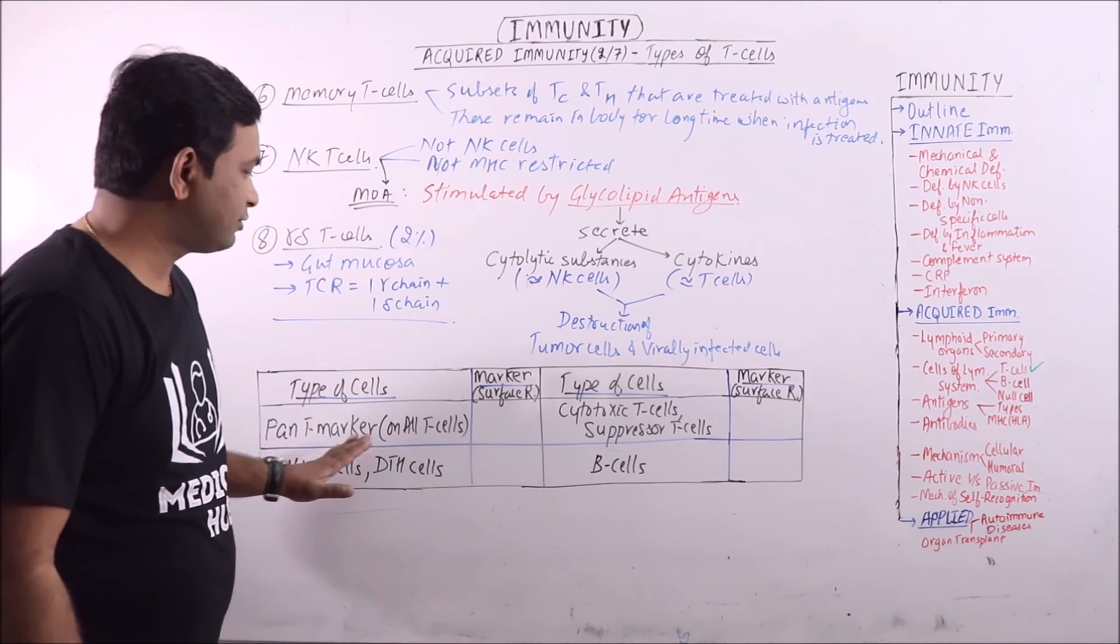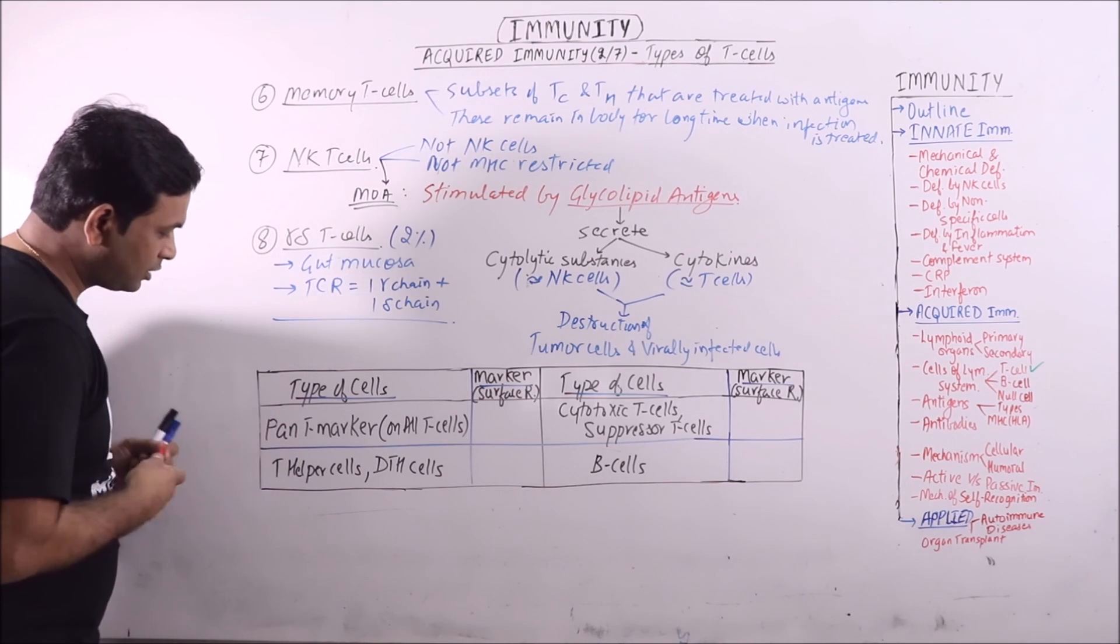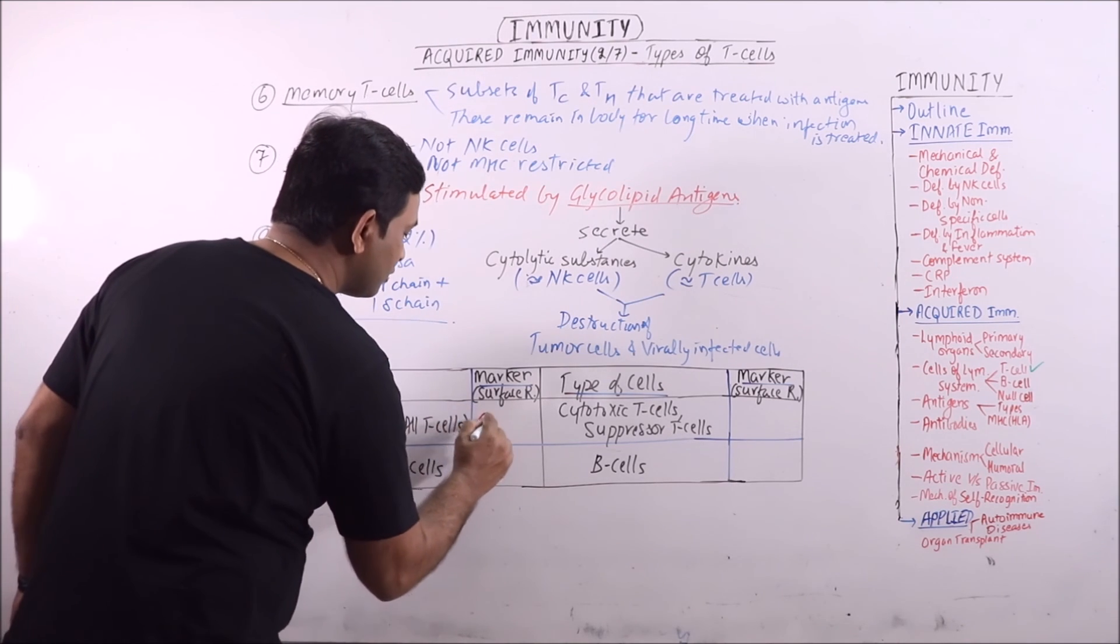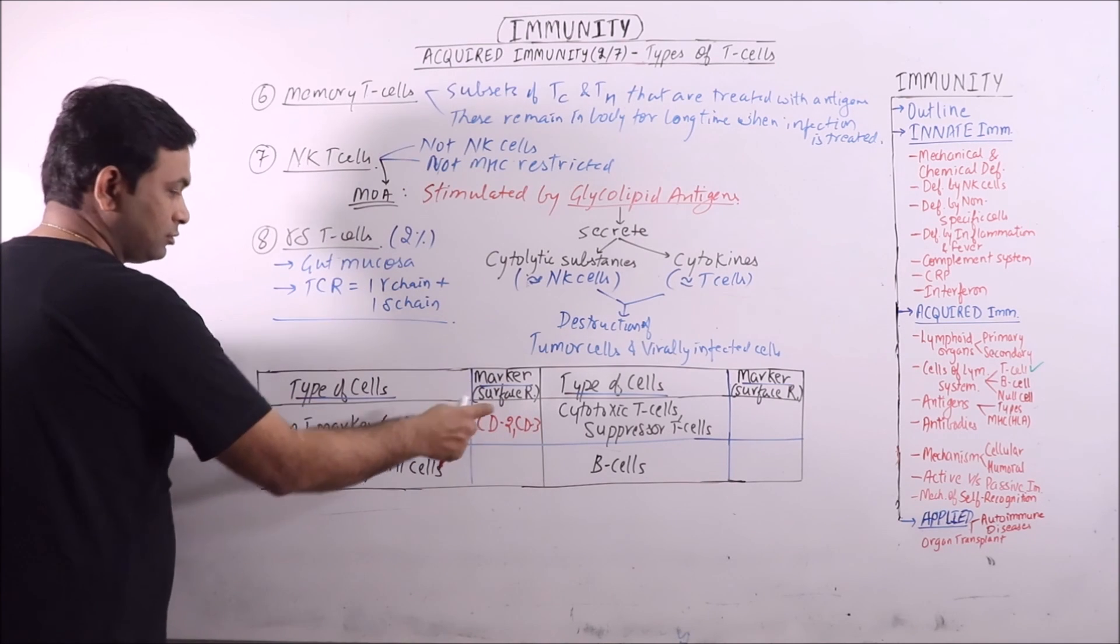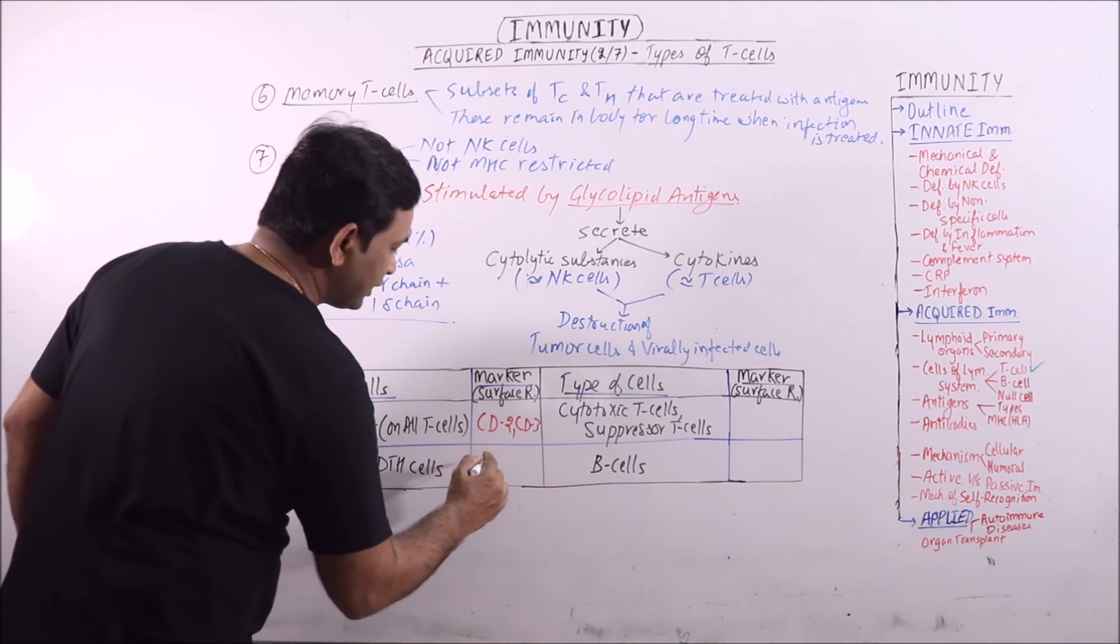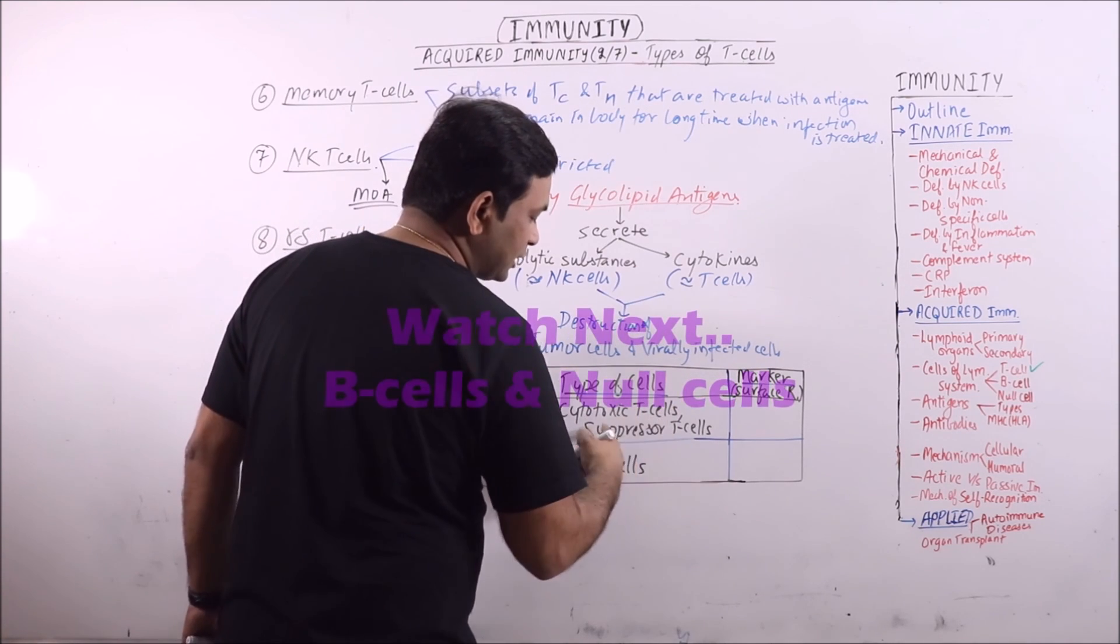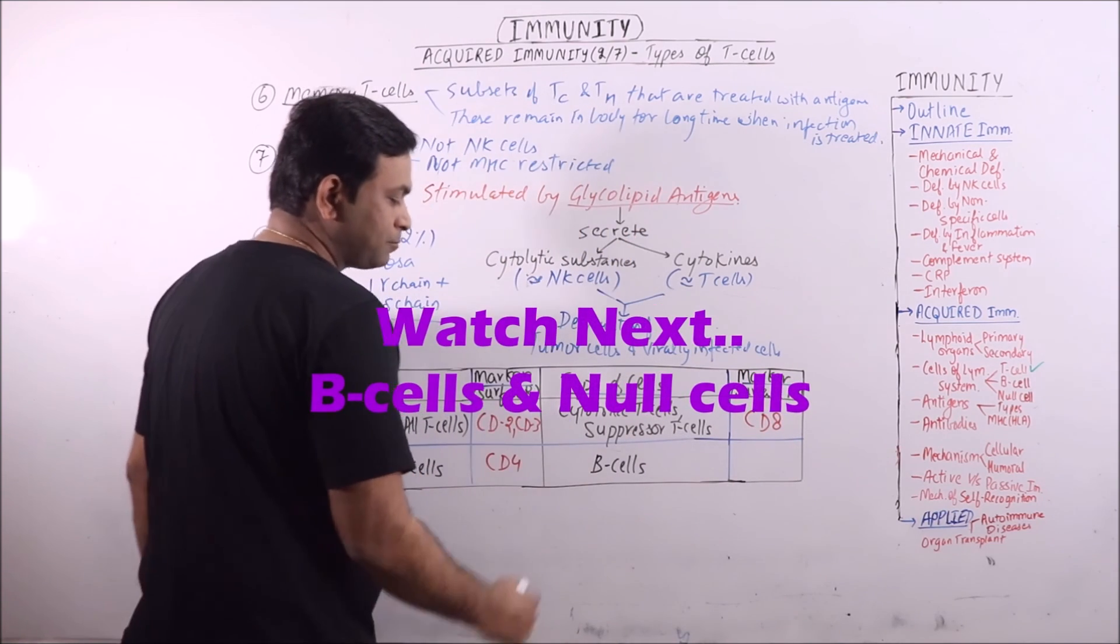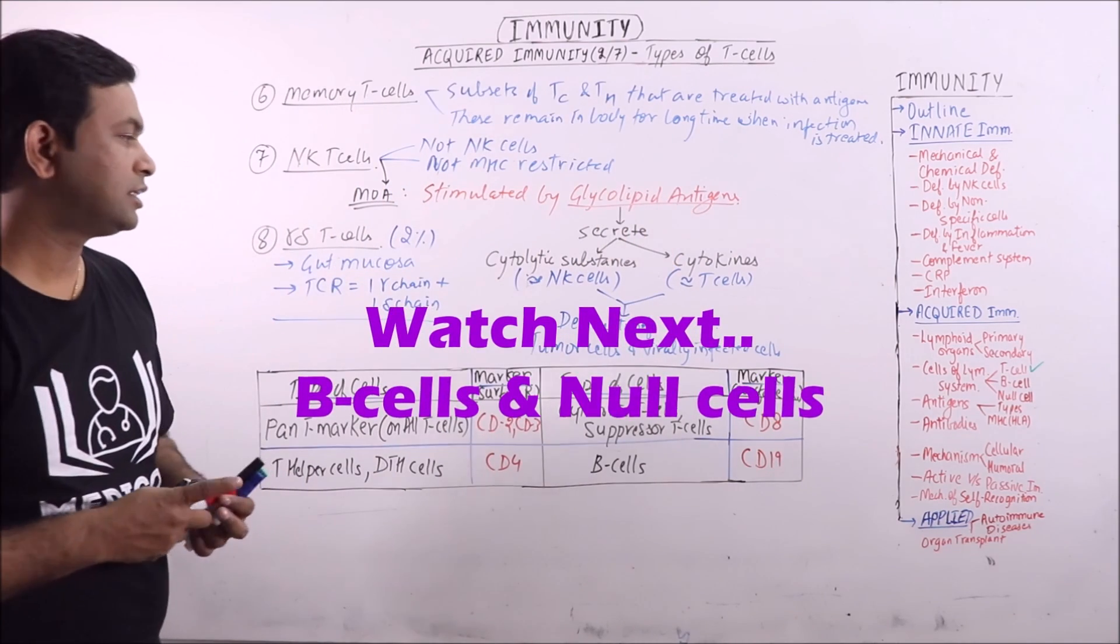We are discussing the type of cells and their specific surface receptors or markers. Pan T marker that is on all T cells: CD2 and CD3 are found on all T cells. Helper T cells and DTH cells have the surface markers of CD4. Cytotoxic T cells and suppressor T cells have CD8 as surface markers. And the CD19 is the surface marker for B cells.